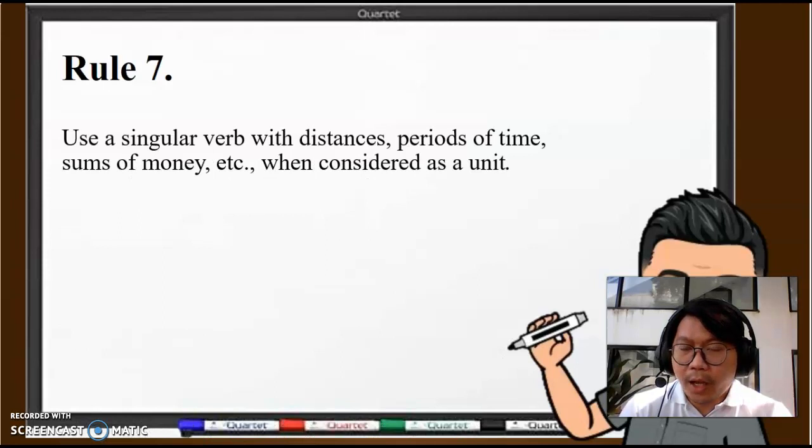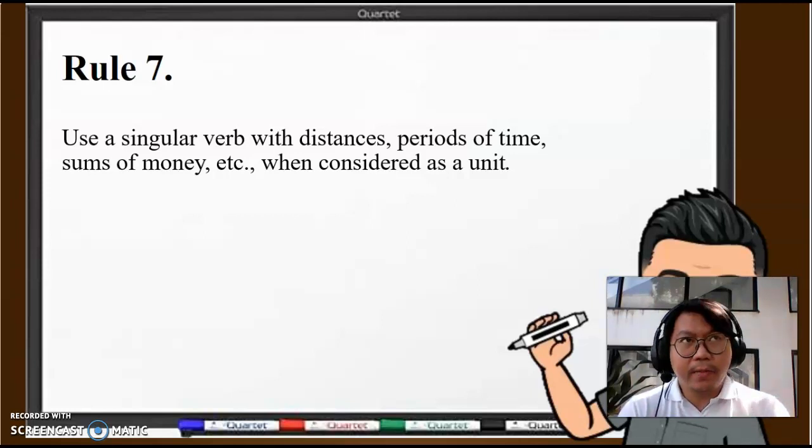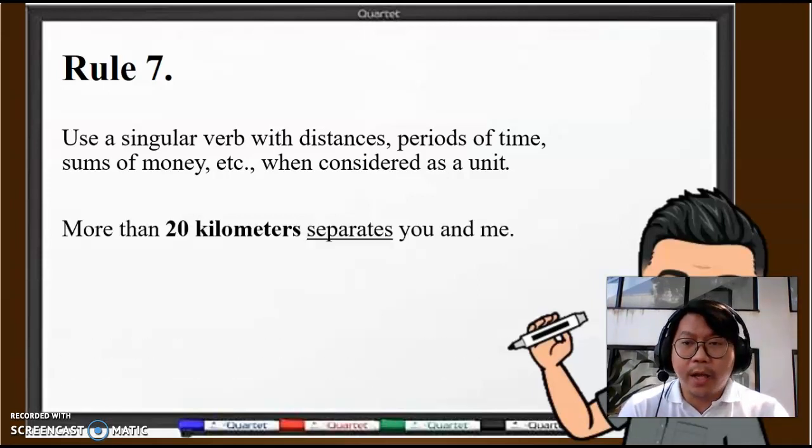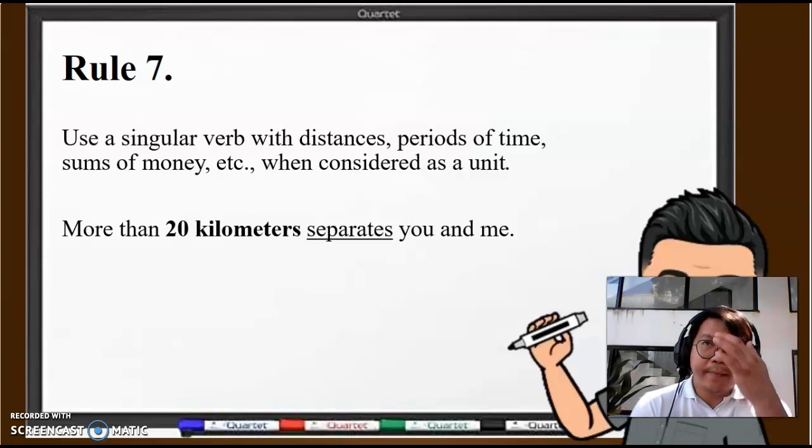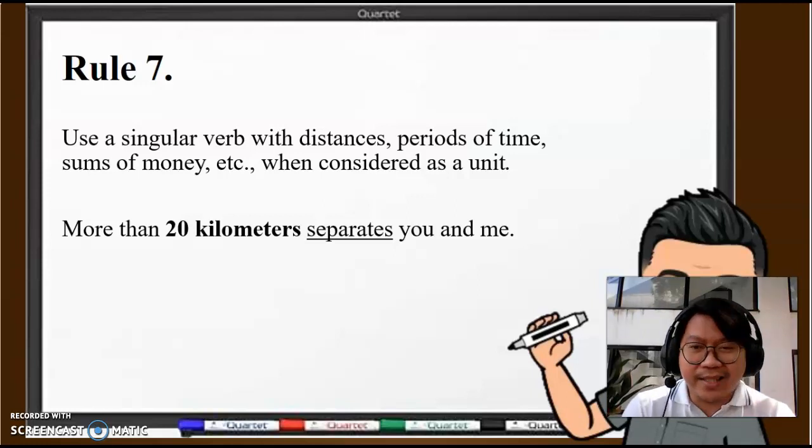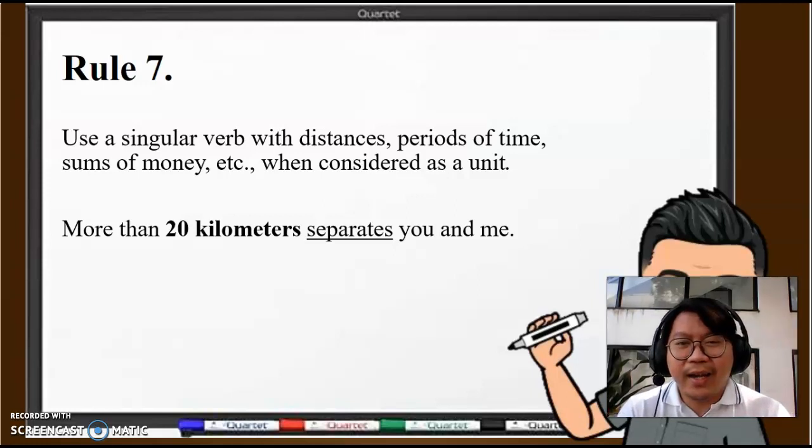Rule number 7: Use a singular verb with distances, periods of time, sums of money, etc., when they are considered as a unit. That means measurement of distance, measurement of time, measurement of money—it's a singular concept, so therefore it will have to take a singular verb. For example, "More than 20 kilometers separates you and me." This is our example. 20 kilometers is one unit describing the distance between you and me—long distance relationship. So we stick to the singular form of separate, so "separates."